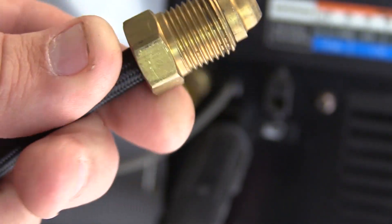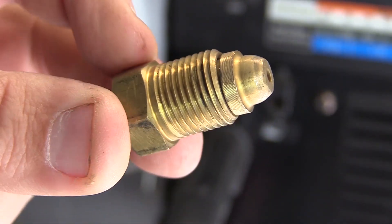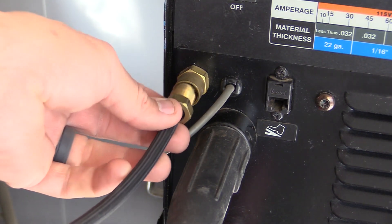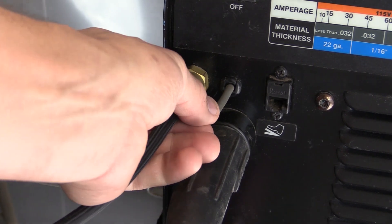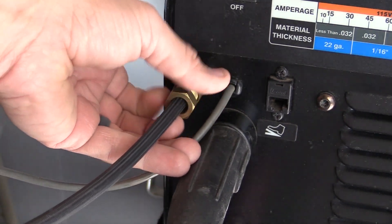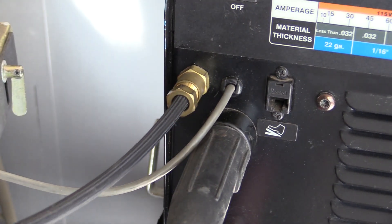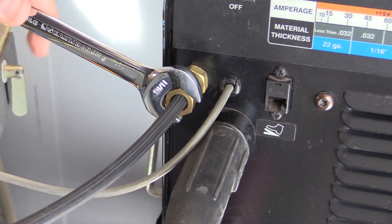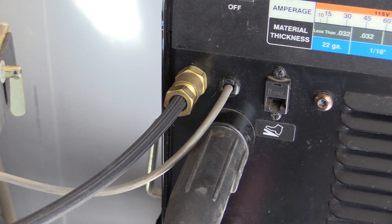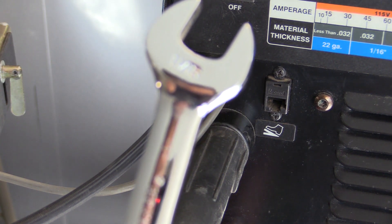TIG torch is your standard inert gas fitting that hooks in right here. Snug it up a little bit and you're done. An 11/16 wrench.